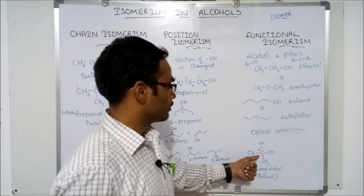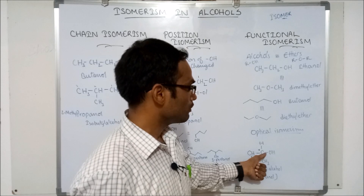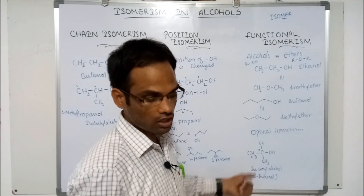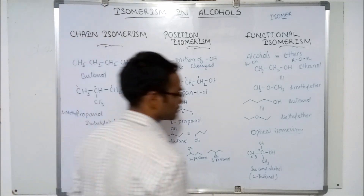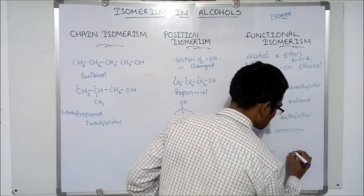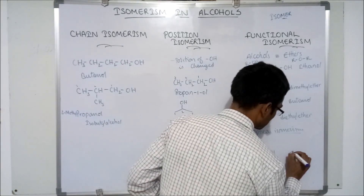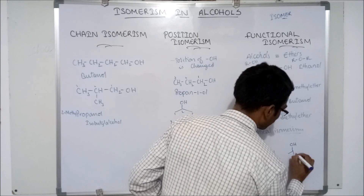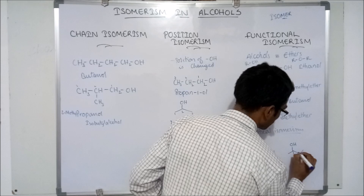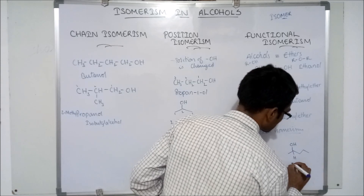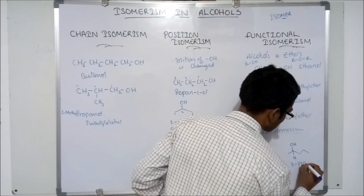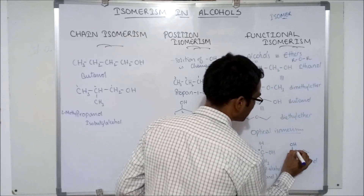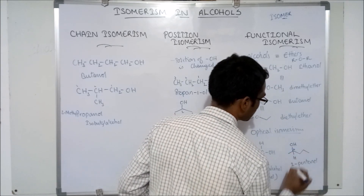What is a chiral carbon? The 4 groups attached to the chiral carbon are all different. One other example is 2-pentanol — counting 1, 2, 3, 4, 5. 2-pentanol also will exhibit optical isomerism.